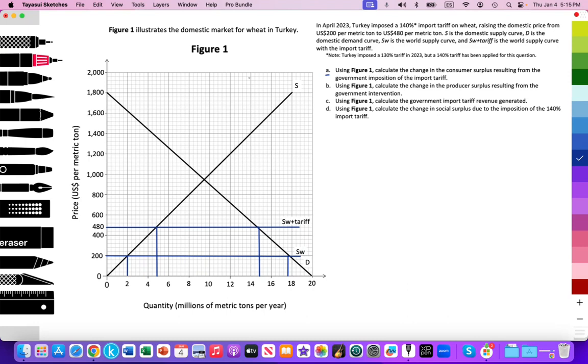On Paper Three, you can be provided a model like we see here with quantitative data on the x and y-axis so we can make accurate calculations. Figure one illustrates the domestic market for wheat in Turkey. On the y-axis we're measuring price in U.S. dollars per metric ton, and on the x-axis we're measuring quantity in millions of metric tons per year.